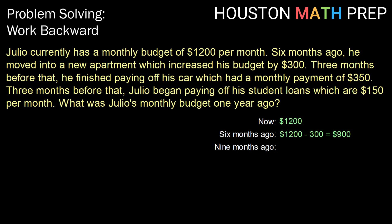The next information we have is three months before that, so three months before six months ago would be nine months ago. At that point, he finished paying off his car, and that car payment was $350. Since he's ceasing to pay that, we would normally subtract, but since we're working backwards, we're going to add that. So we're going to take that $900 and add in that car payment he was paying, to say that nine months ago, Julio's monthly budget was $1,250.